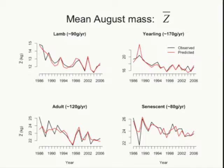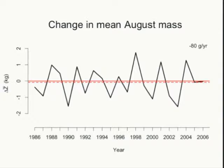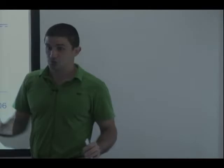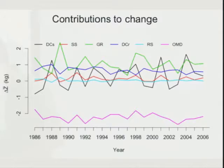Looking at the mean trait value for the whole population — all age classes together — on the y-axis is the change in mean trait value. The solid red line is the line of no change. During positive years, the mean trait value increased; during negative years it declined. On average, there has been about 80 grams per year decline. One thing we notice right away is that there hasn't been a steady decline — some years increased, some declined, there are substantial fluctuations. Using the Price Equation, we take these changes and decompose them into contributing processes.